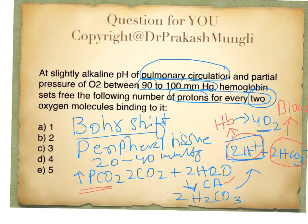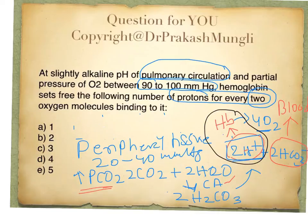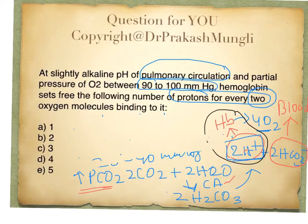So for every two protons binding to hemoglobin, four oxygen molecules are offloaded in the peripheral tissue. When the four oxygen molecules are unloaded, hemoglobin is completely deoxygenated. This deoxygenated hemoglobin, bound with two protons, returns to the lungs. This entire process is called the Bohr shift.